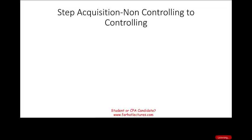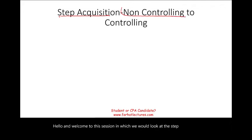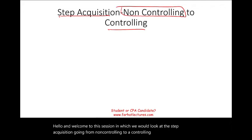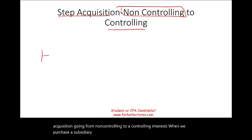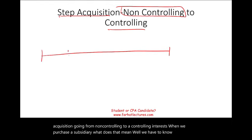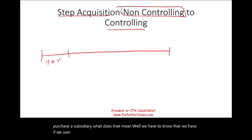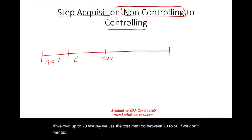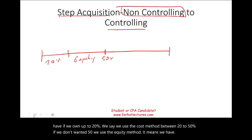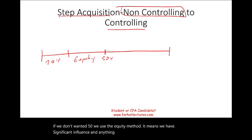Hello and welcome to this session in which we would look at the step acquisition — going from non-controlling to a controlling interest when we purchase a subsidiary. If we own up to 20%, we use the cost method. Between 20 to 50%, we use the equity method, meaning we have significant influence. And anything above 50%, we have control of the company.